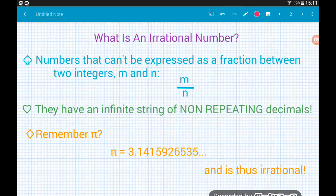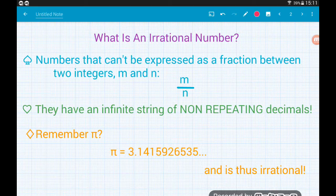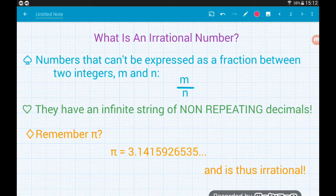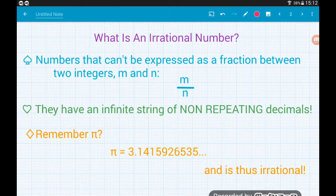And if you're thinking you've never come across such a number, I can pretty much guarantee that anybody watching this video has come across pi at some point in their life. Now pi is an irrational number and remember it's the ratio between the circumference and diameter of a circle.